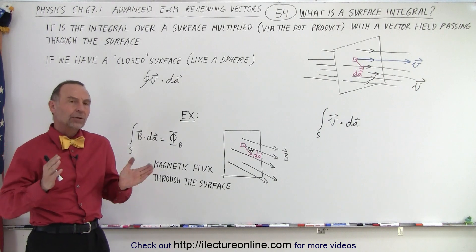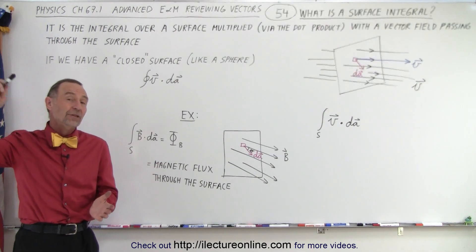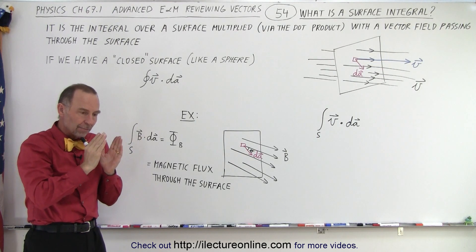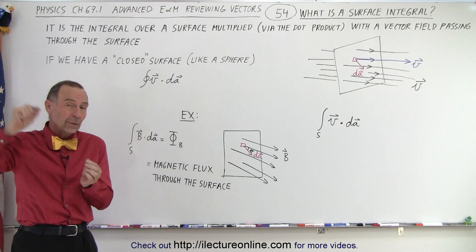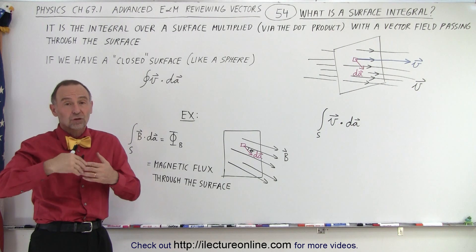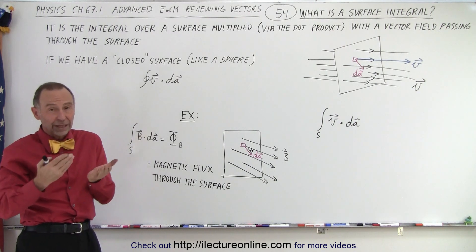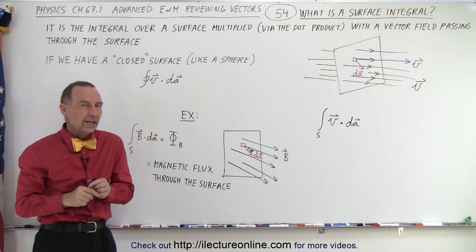With a line integral, we had a vector field, then we had a path through that vector field, and we integrated the magnitude and direction of the vector field at any point along that path with the small segment along that path, a small displacement, and we did so by multiplying the two together via the dot product.